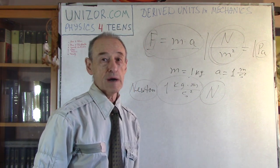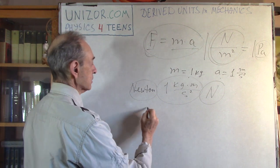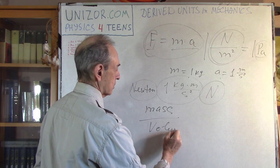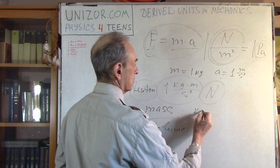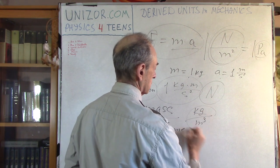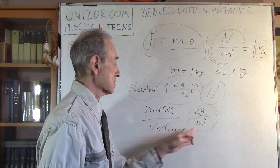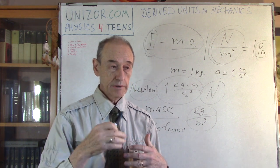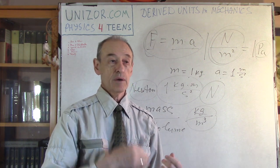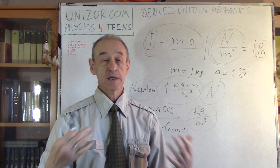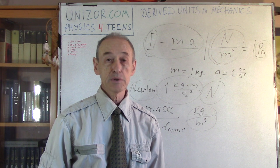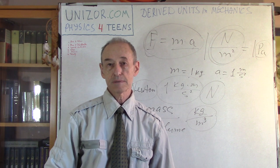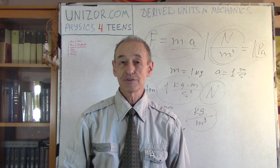The last one for today is density — the amount of mass per unit of volume. So the unit is kilograms per cubic meter. Again, there is no specific name for this unit. These are the units used in mechanics. The next lecture will cover units used in energy and other areas, continuing to build new units based on previous ones. That's it for today — thank you very much and good luck.